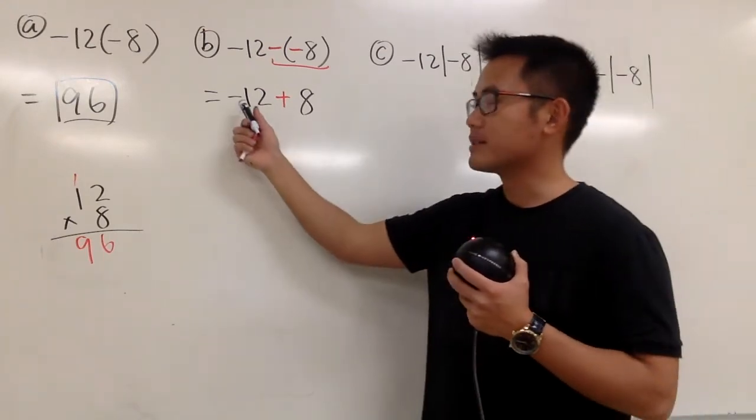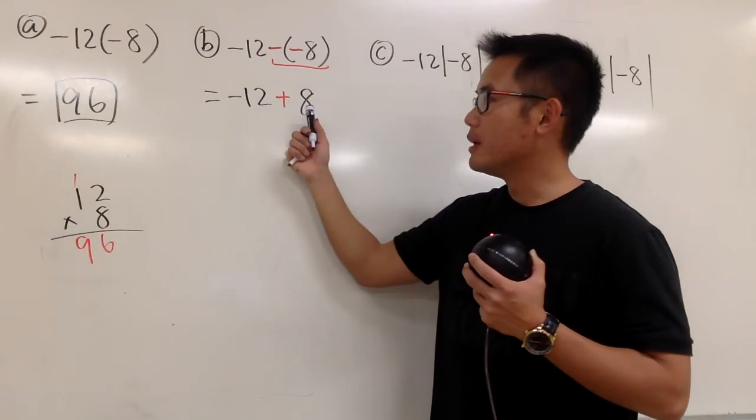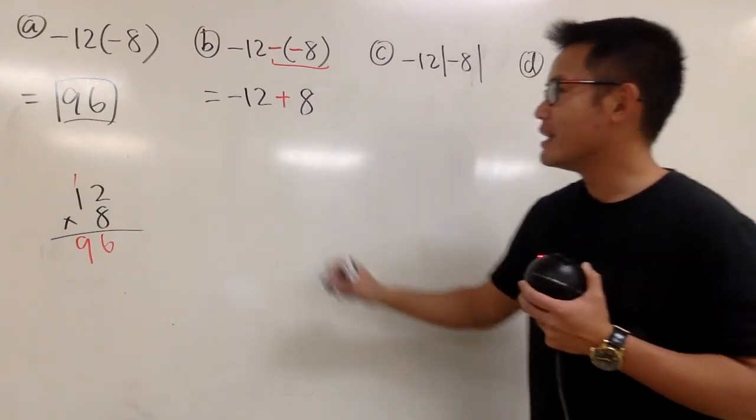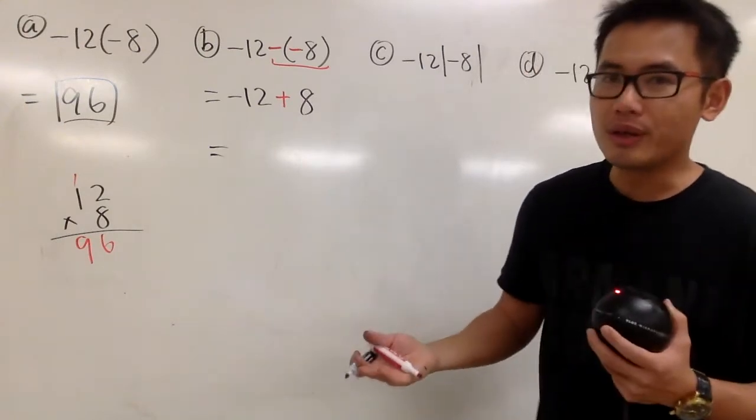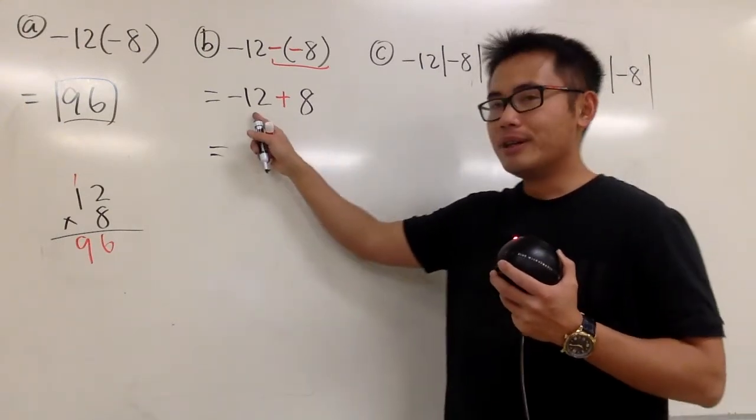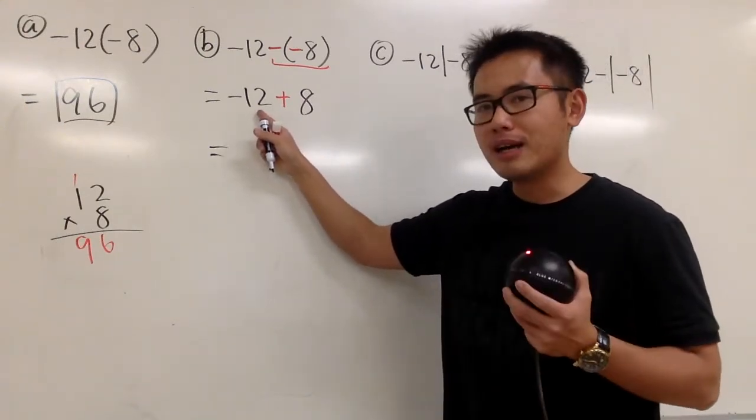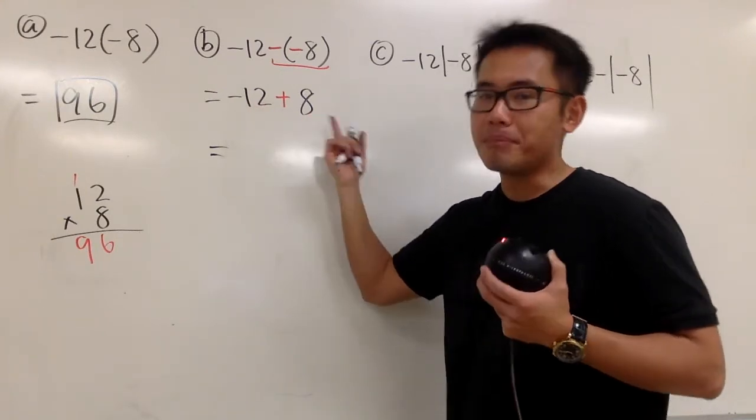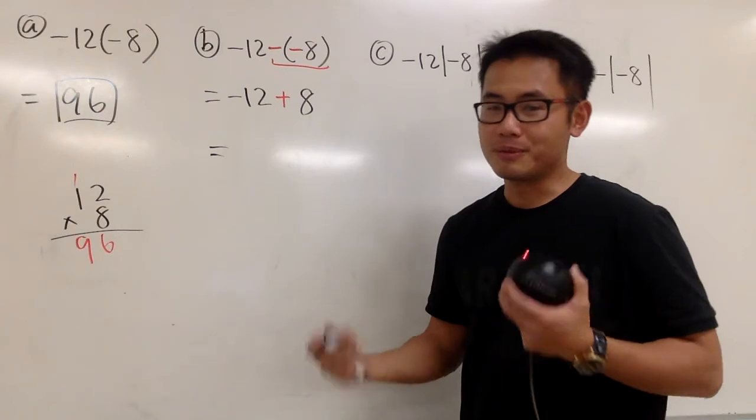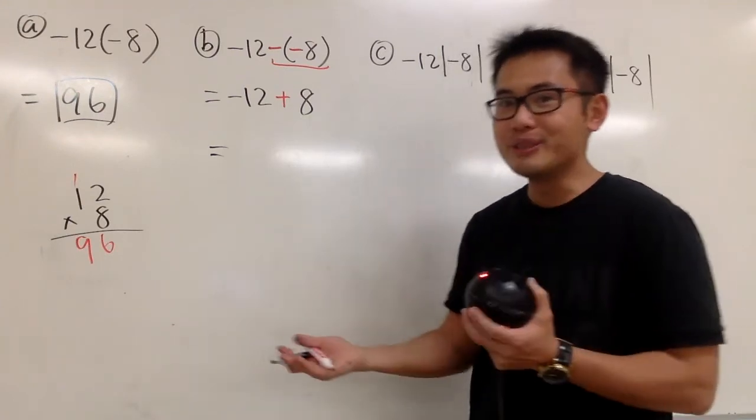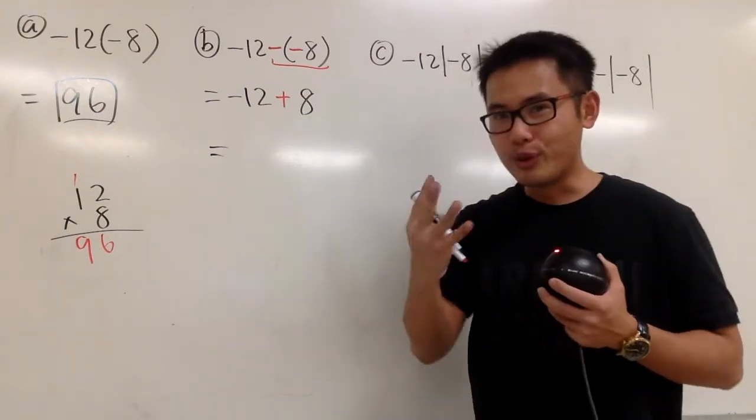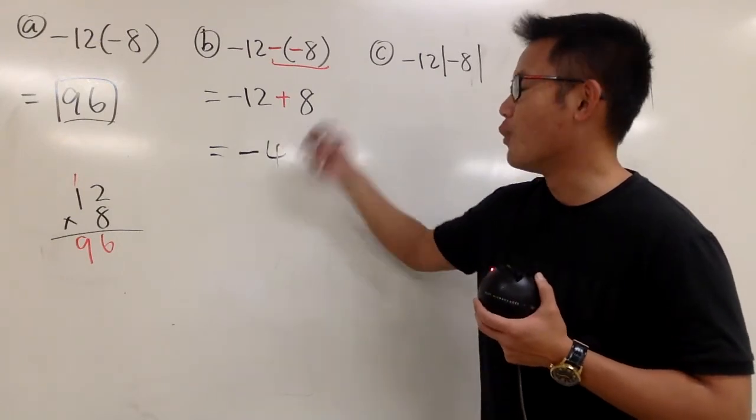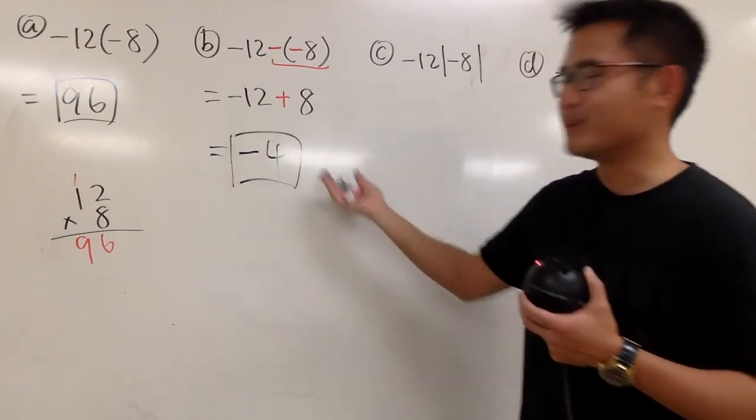In the end, we just have to work out -12+8. We are combining these two numbers. This is when we can think about it. Suppose yesterday I lost 12 dollars, but today I gained back 8 dollars. What's the overall conclusion? I am still losing, right? I am still losing 4 dollars. Because I am still losing, that's negative, and it's just 4. So the answer to this is negative 4.